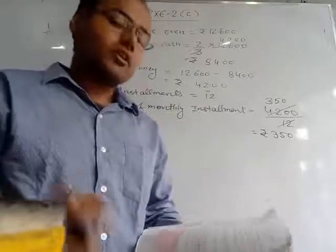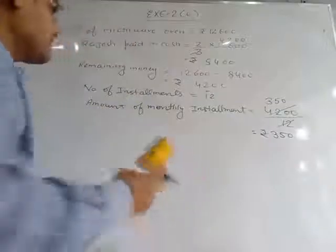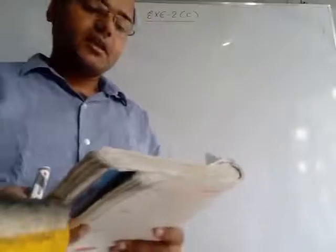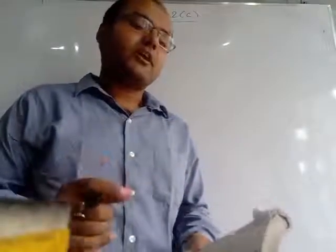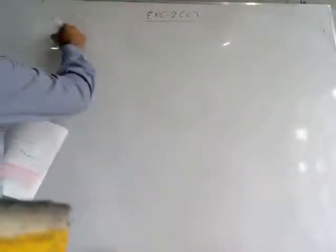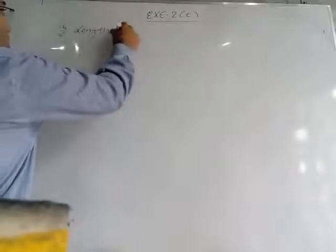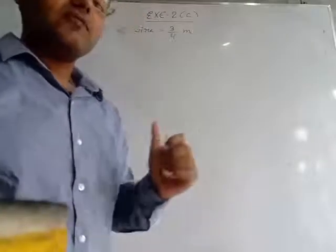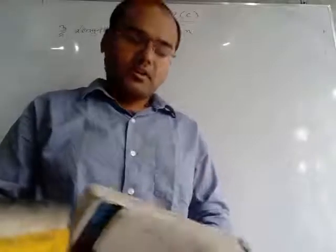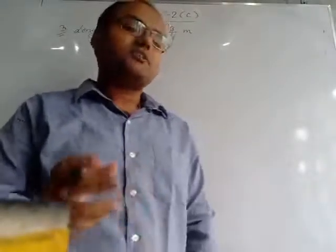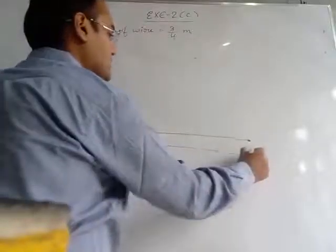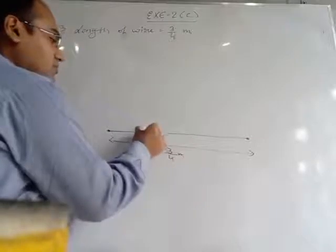Now come to question number 3. The question is: a piece of wire is 3/4 metre long. So first of all we write: length of wire is given as 3/4 metre. Suppose this is the rope — total length of this rope is 3/4 metre.